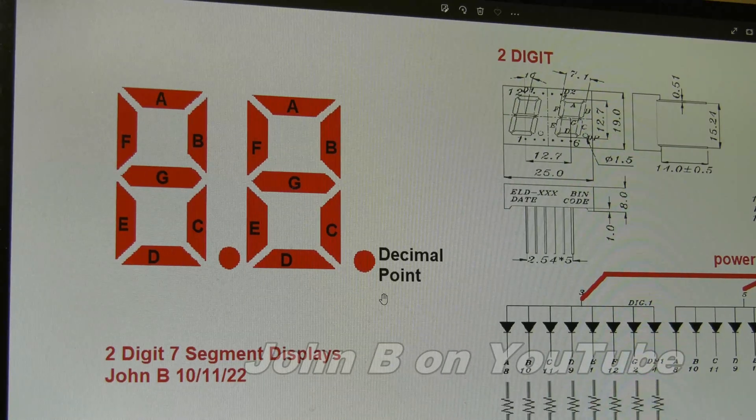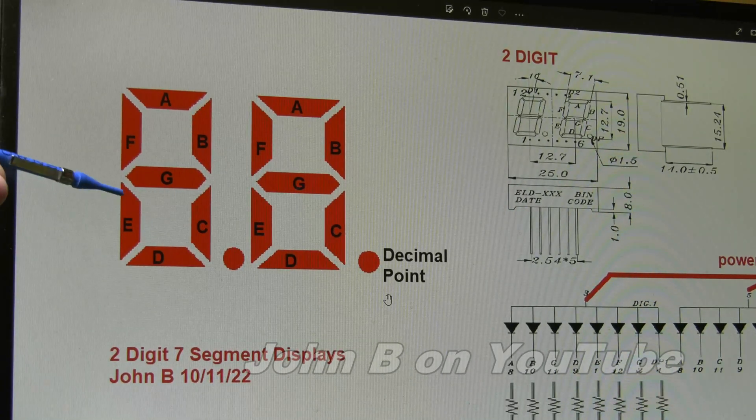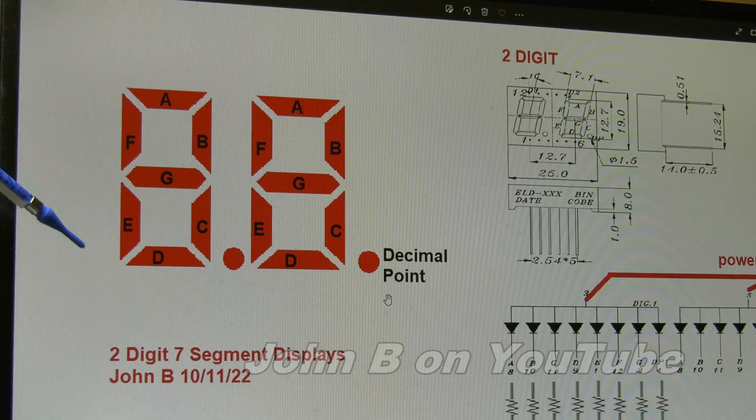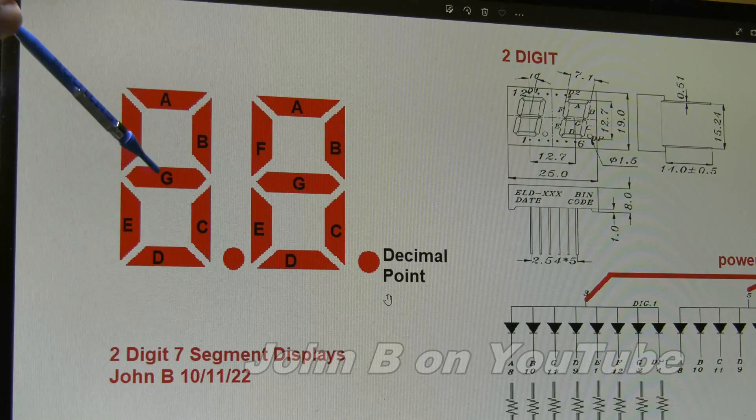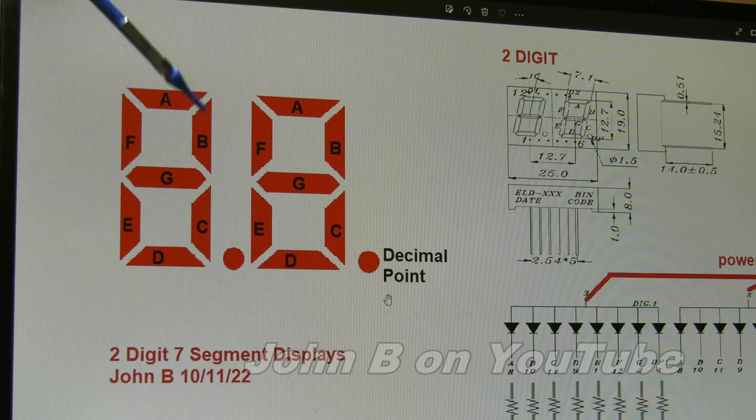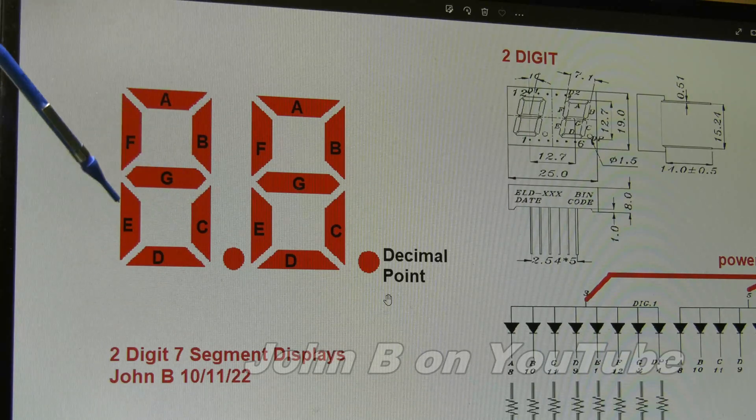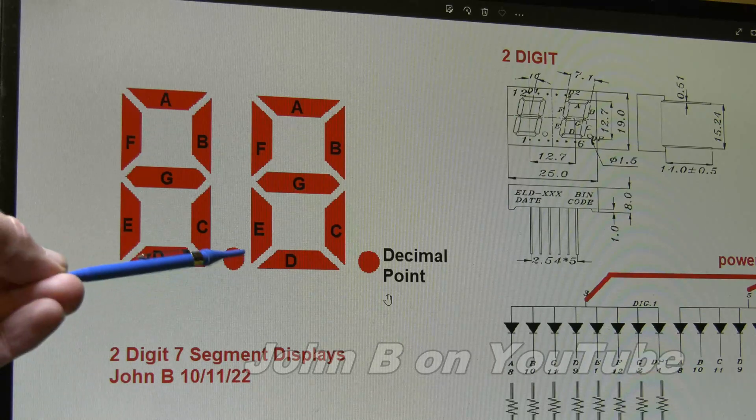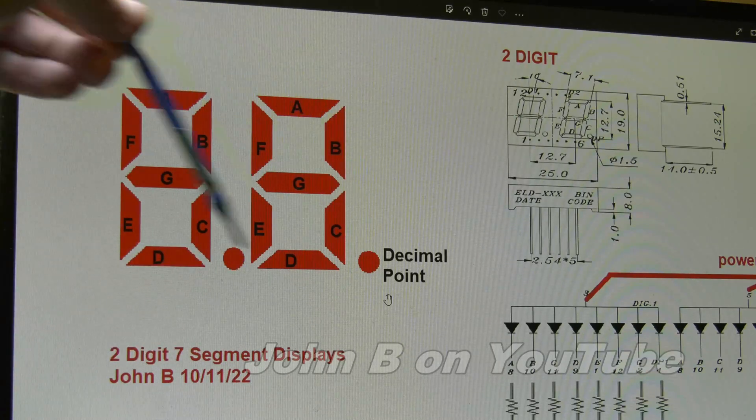So this video is obviously for the newbies who know nothing about seven segment displays. There's one seven segment, one, two, three, four, five, six, seven, second segment, and they are labeled like that: A, B, C, D, E, F, G, and decimal point. So that sounds straightforward enough.